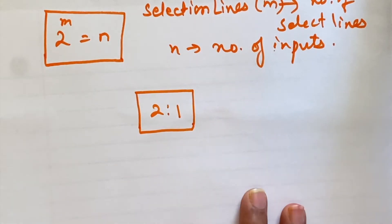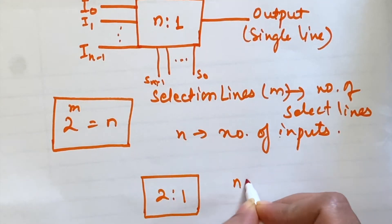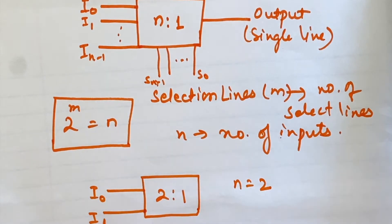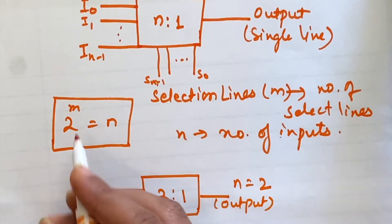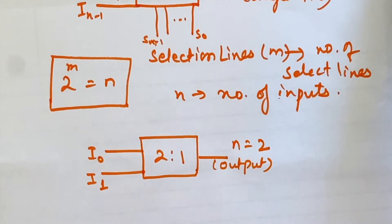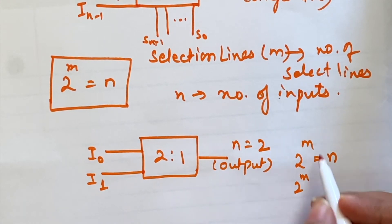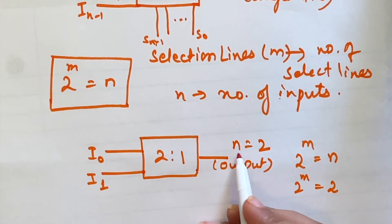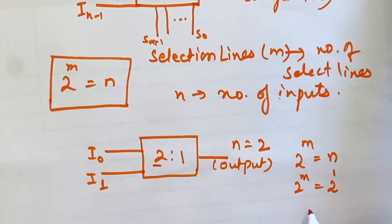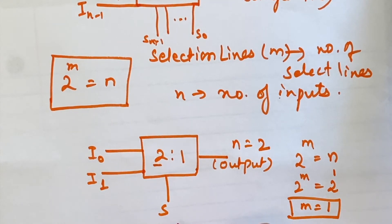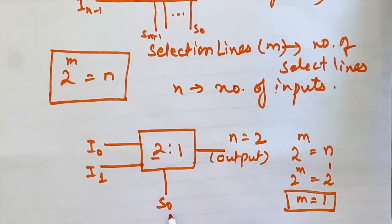For a 2-to-1 multiplexer, n equals 2, so the inputs are I0 and I1, and there is one single output line. To find the number of select lines we use the equation 2 to the power m equals n, which gives us 2 to the power m equals 2, so m equals 1. Therefore there is only one select line, S0, which decides which of the inputs I0 or I1 is forwarded to the output.